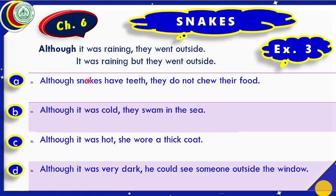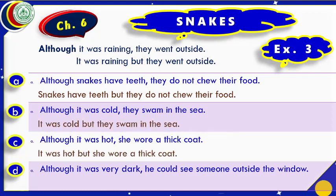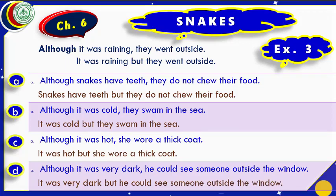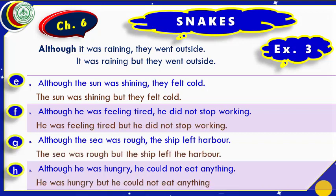The first answer will be: 'Snakes have teeth but they do not chew their food.' In our answer there is no 'although' — instead of a comma there is 'but.' By using this rule we complete the next answers. For part E: 'The sun was shining but they felt cold.' And: 'He was hungry but he could not eat anything.' We have left the word 'although' and replaced the comma by writing 'but.' We have completed exercise 3.